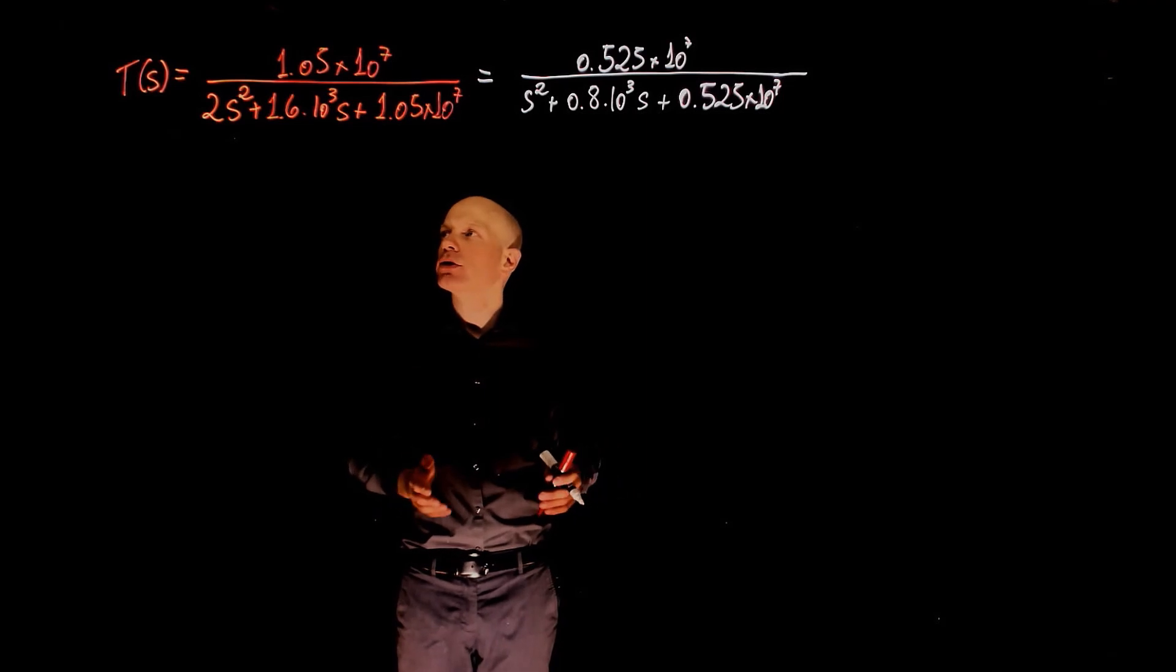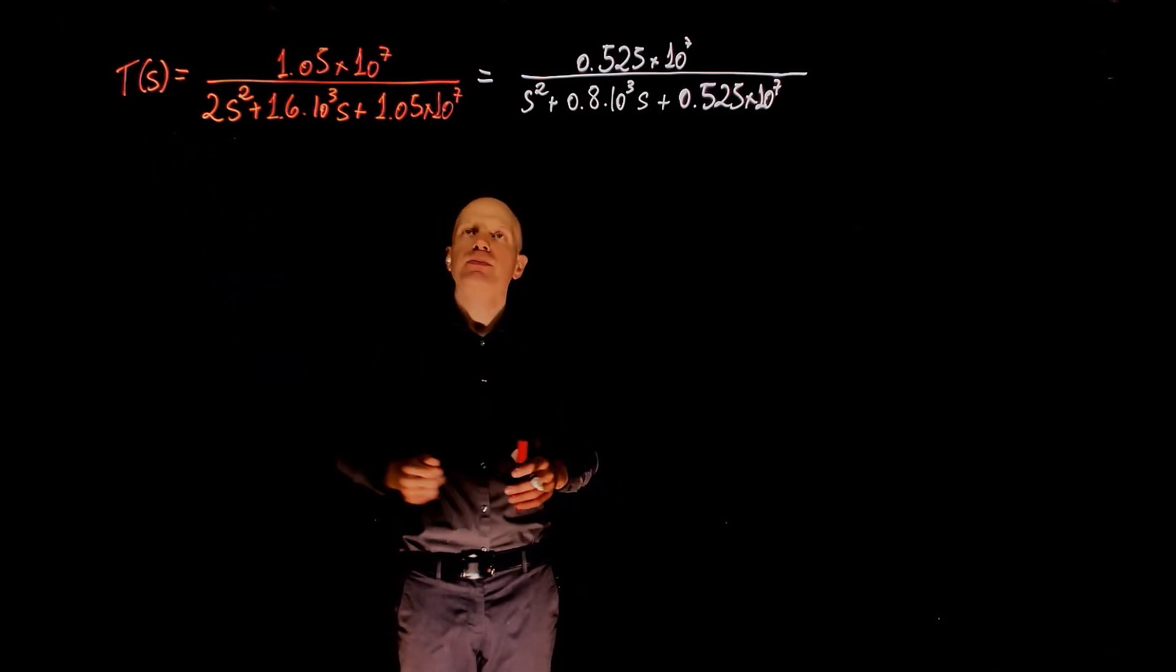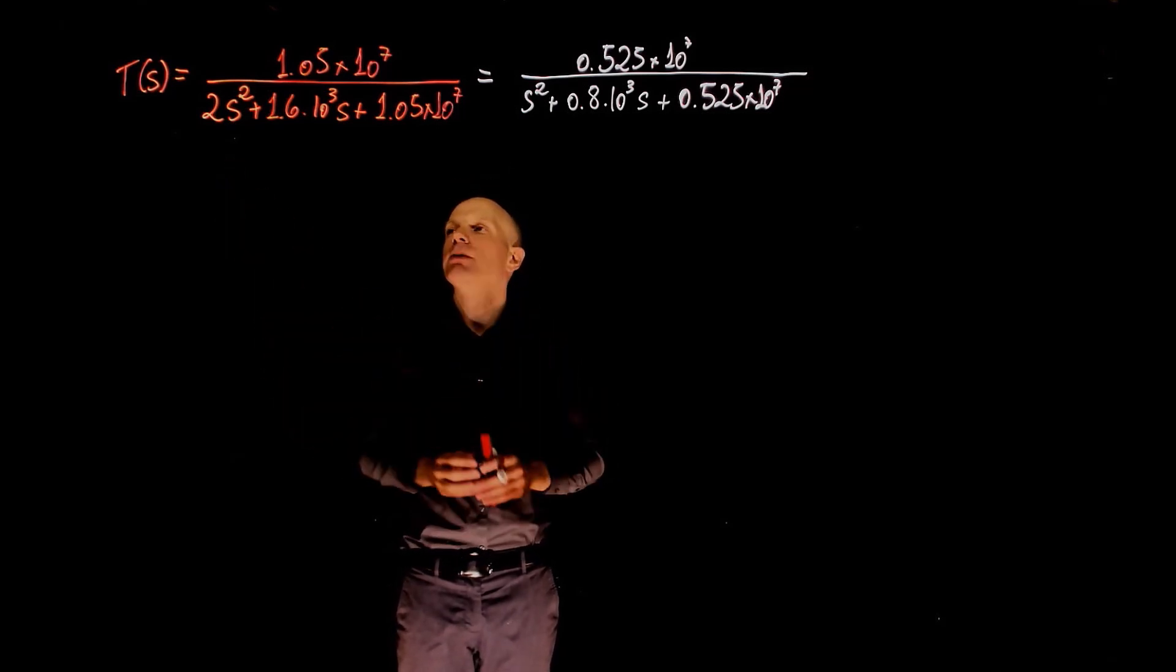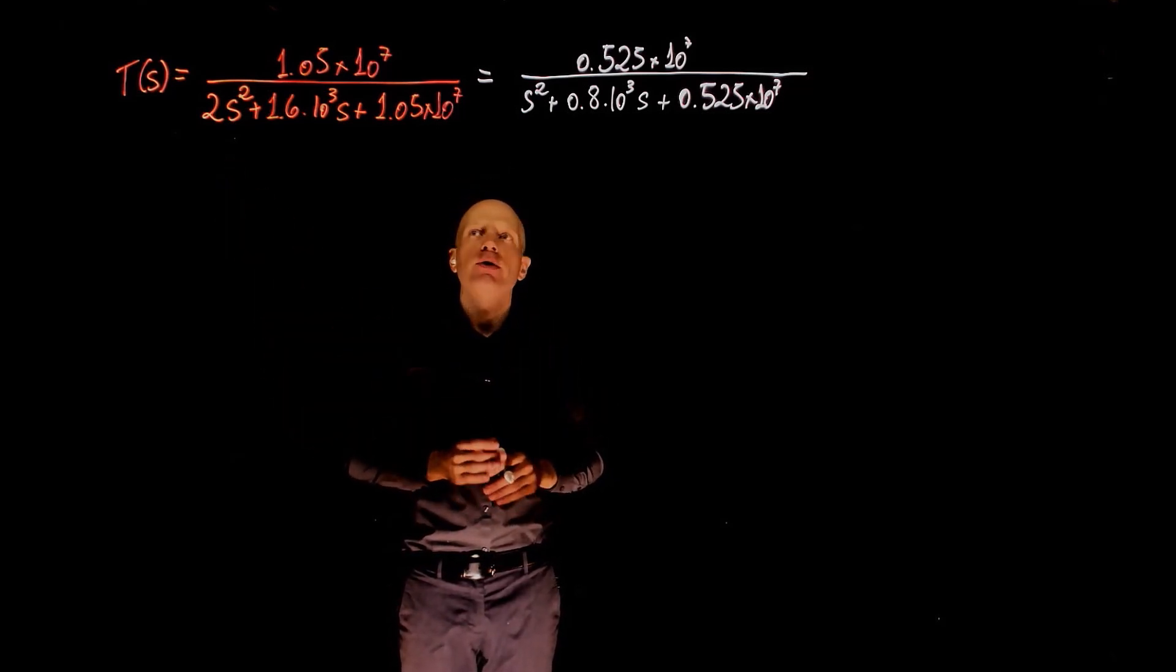We are now looking for the final value of t when an input is given to the system that is represented by this transfer function. For a step input, that input is 1 over s.